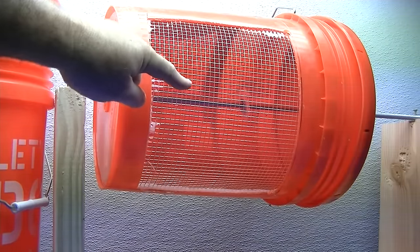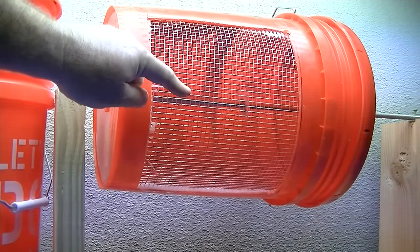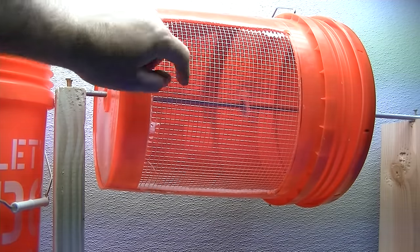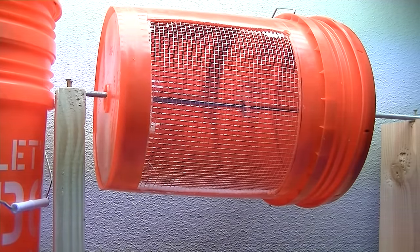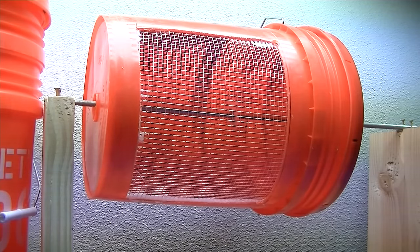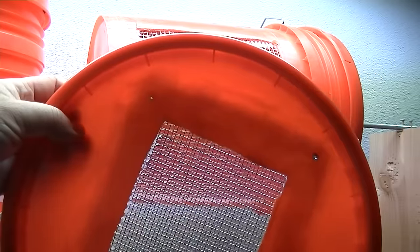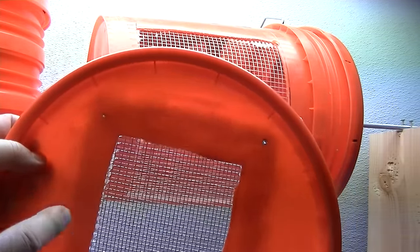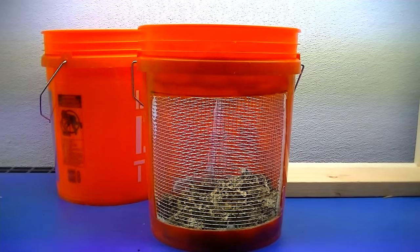Here we have a quarter-inch hardware cloth mesh screen, and that means it's a quarter inch each way in the whole opening. That's going to be our first grading of our worm castings. Then we're going to come back and screen them one more time using a one-eighth inch opening.